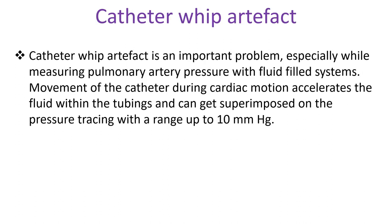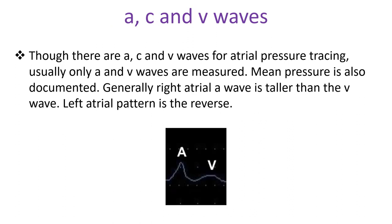Catheter whip artifact is an important problem, especially while measuring pulmonary artery pressure with fluid-filled systems. Movement of the catheter during cardiac motion accelerates the fluid within the tubings and can get superimposed on the pressure tracings, with a range of up to 10 mmHg.